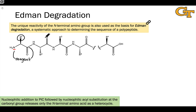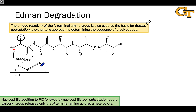Once we do that, we can repeat the process to determine R2, R3, R4, and so on and so forth. The reagent used to do this is phenylisothiocyanate, or PIC. You'll also sometimes see it written as PITC.